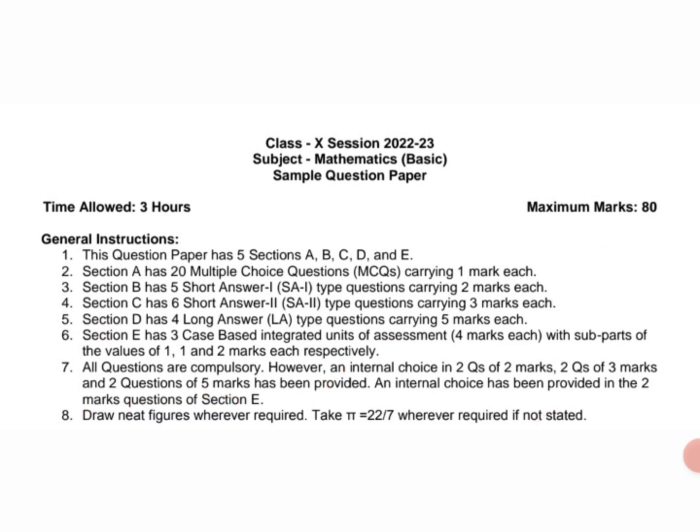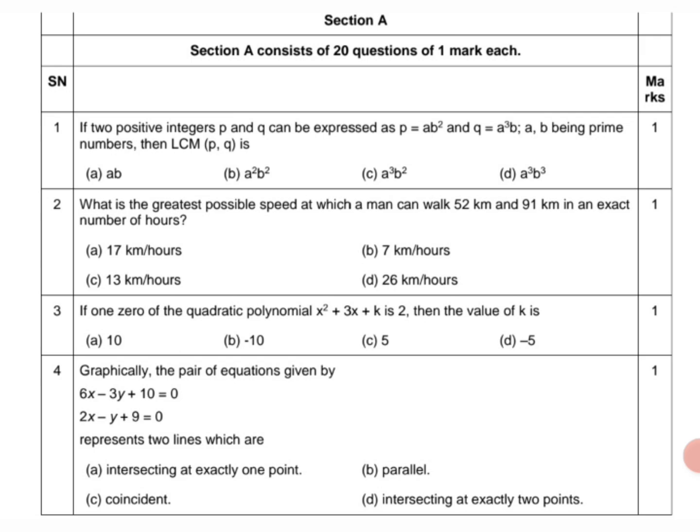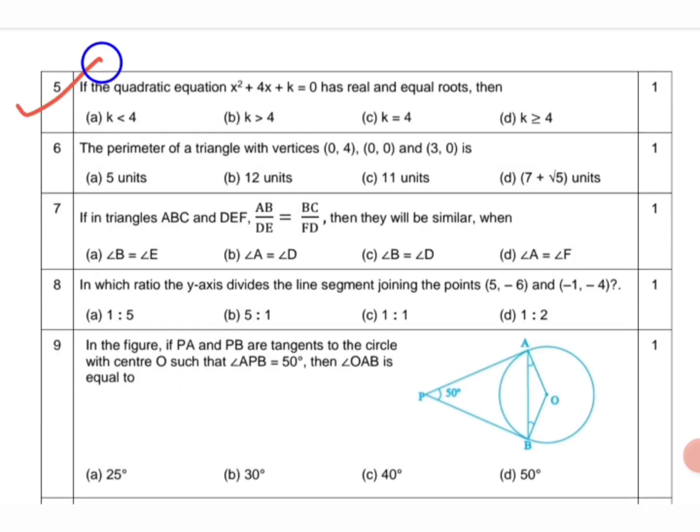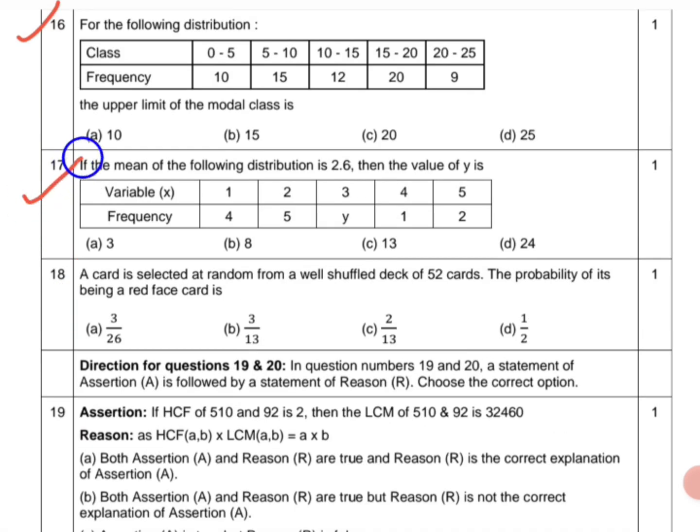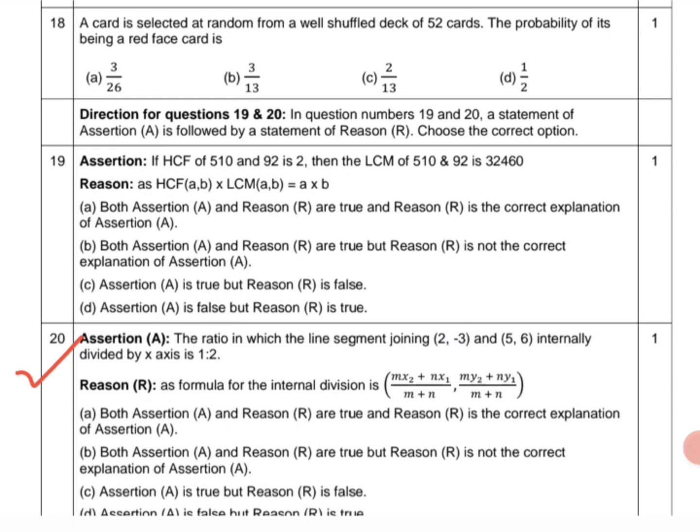Now I am telling about Section A. Section A consisting of 20 questions of one mark each. If I read each statement it will take time and you can check here and practice. Questions 2 through 20 all have four options A, B, C, D. You have to choose the correct answer.